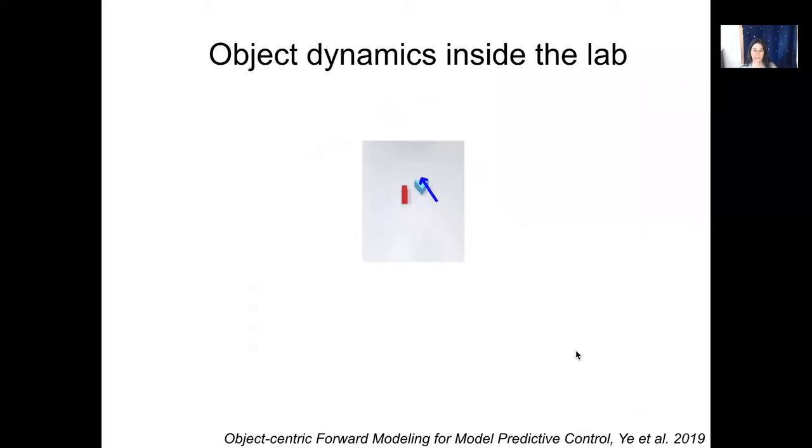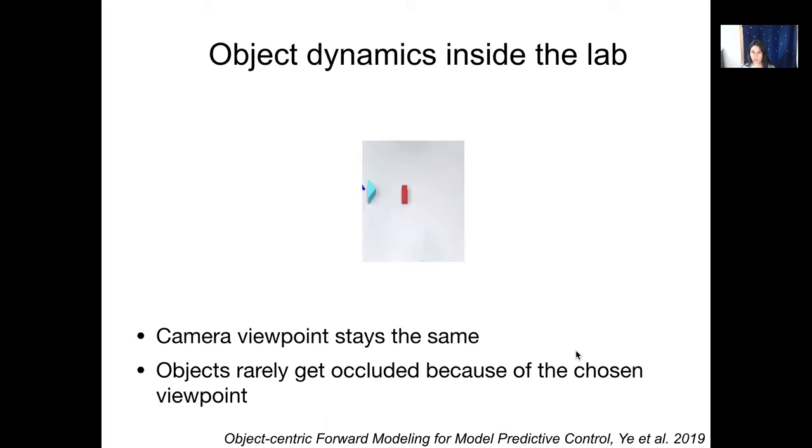So this is how we address learning of object motion dynamics in the lab. We have our robot which is usually a Baxter robot or a Sawyer and then we pick a camera viewpoint that is convenient, usually close to overhead, so that we avoid cross-object occlusions. The camera never moves and the objects rarely get occluded from this viewpoint. And I would say the state-of-the-art method is take the image, detect the objects, every object becomes a node in a graph neural network, and then train your network to predict where the objects will go in the 2D space.